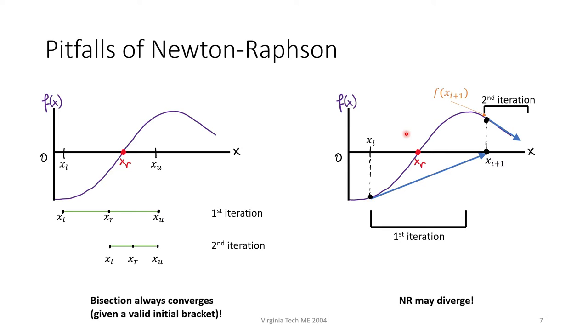Unlike bisection, you aren't guaranteed to converge to a root. This is one of the pitfalls of Newton-Raphson.